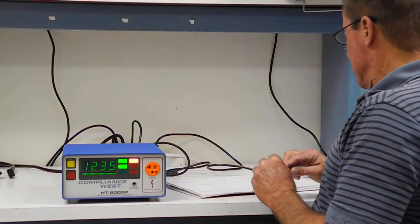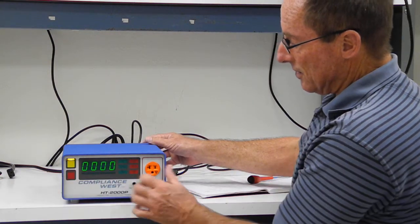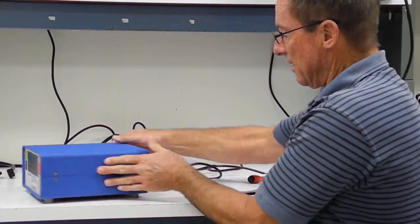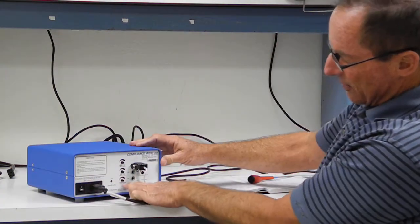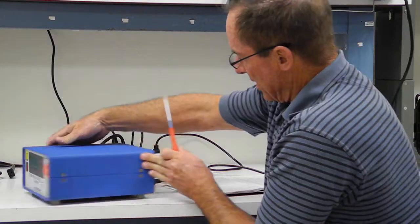Okay, the next thing we're going to do is set the trip current for 2 mils. I'm going to turn it off. We don't need to have it running. The trip current is down here at the bottom. It's called leakage limit, and you do that by turning the knob.